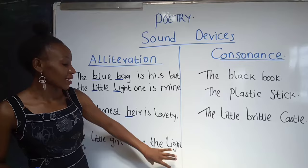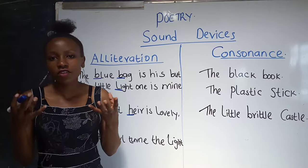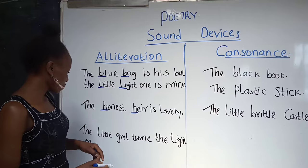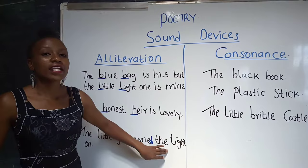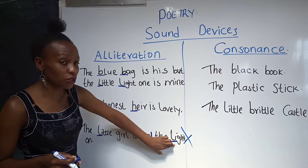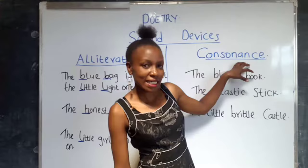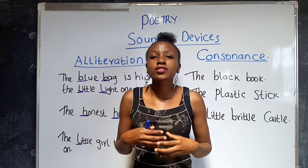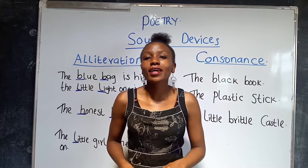Lastly, if the sounds do not follow each other closely, that is not alliteration either. For example, 'the little girl turns the light on' — we have this L and this L, but this is not alliteration because these sounds do not follow each other closely. Moving on: consonance is the repetition of a consonant sound in the middle or at the end of a word in a poem.